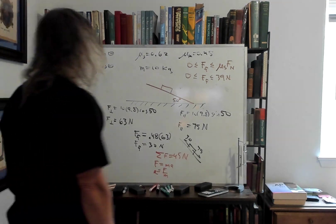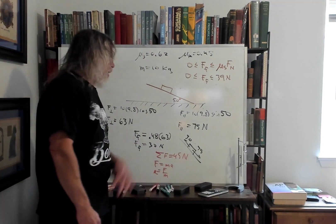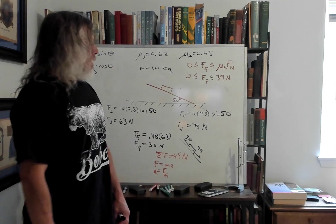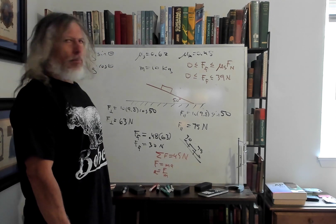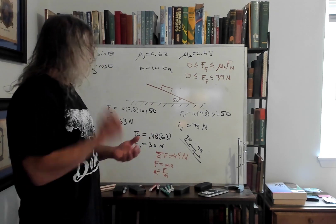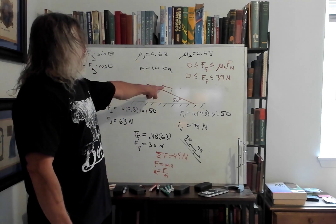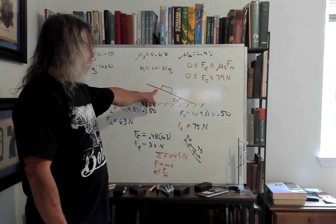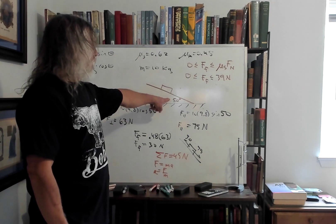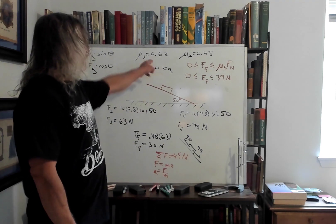All right to continue where we left off after I've had a late breakfast. So we had our oak block on an oak inclined plane inclined at 50 degrees from the horizontal.